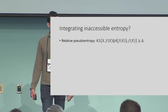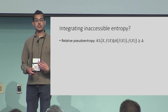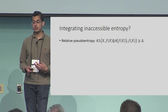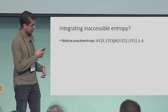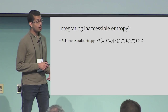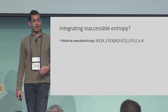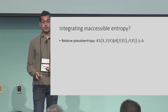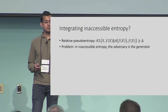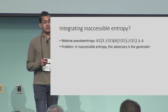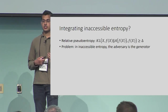This talk is about unifying the entropies. How are we going to put inaccessible entropy into this framework of relative pseudo-entropy? In relative pseudo-entropy, there is an adversary A on the right-hand side whose purpose is to invert the one-way function. But for inaccessible entropy, the adversary is really not an inverter — it's a malicious generator or sampler.